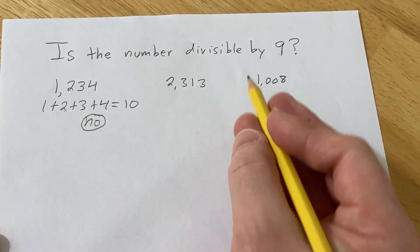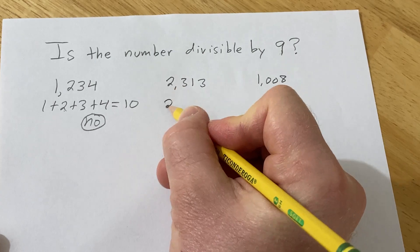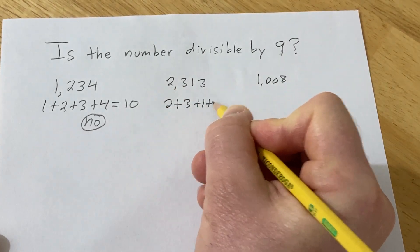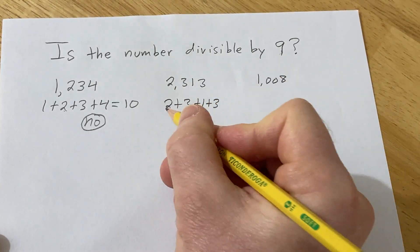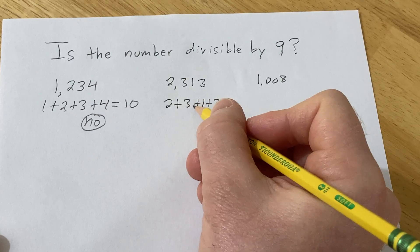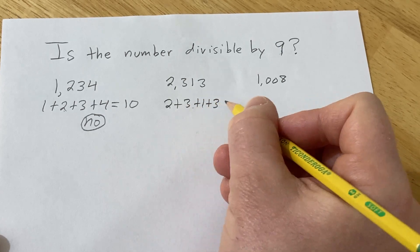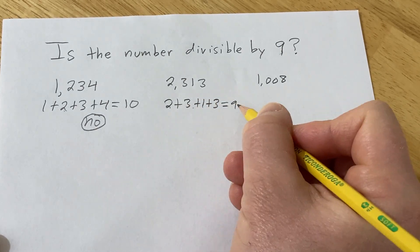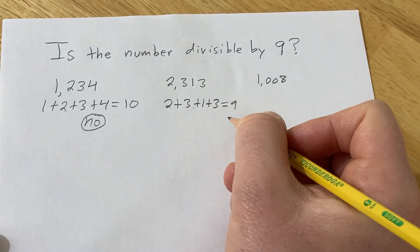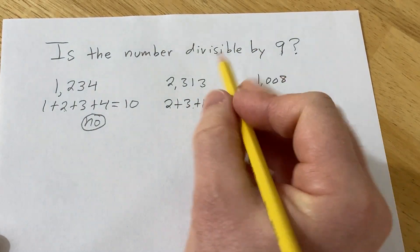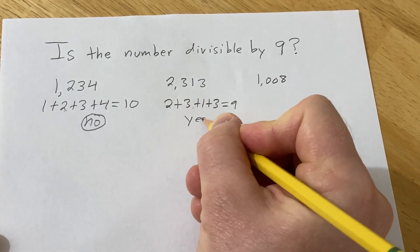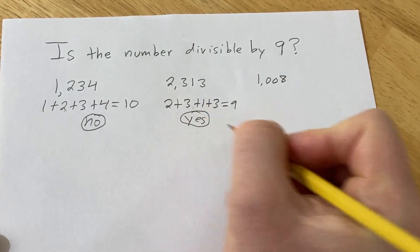Let's try this one: 2 plus 3 plus 1 plus 3. That's 5 plus 4, so it equals 9. Since 9 is divisible by 9, therefore this number is also divisible by 9. So the answer is yes.